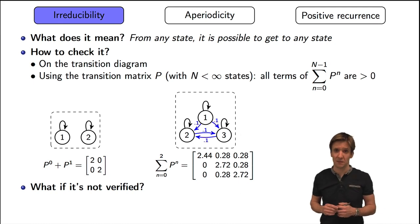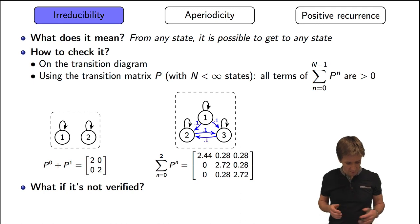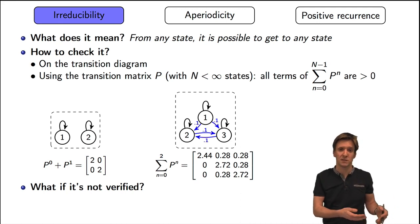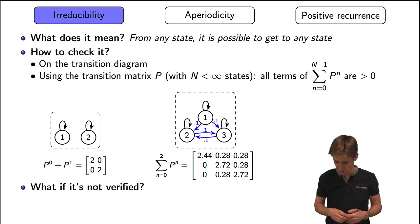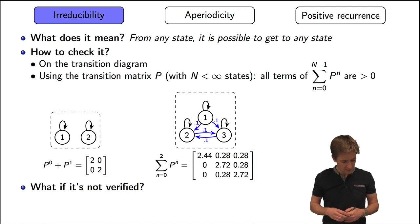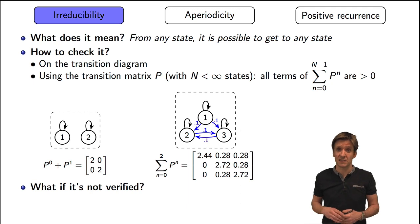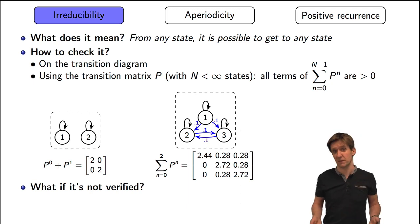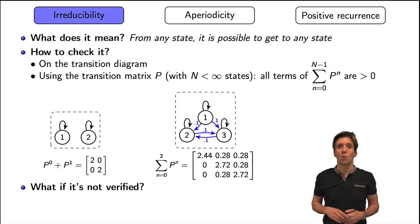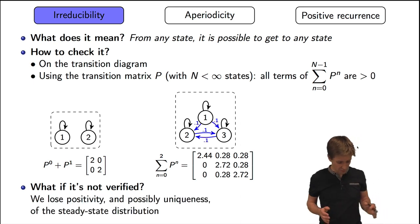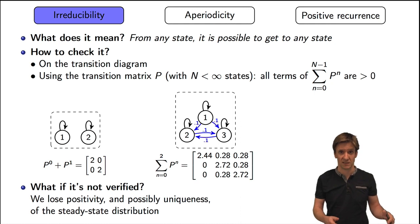Like if you look at the first example on the left: if we start in state one, the probabilities converge because they remain the same — we are for sure in state one at whatever time we look at the chain. But if we started in state two, we will stay in state two forever. So the probabilities converge, but what they converge to depends on where we started, and that's not what we wanted. To summarize: if the Markov chain is not irreducible, we lose the positivity of the steady-state distribution, and possibly also the uniqueness.